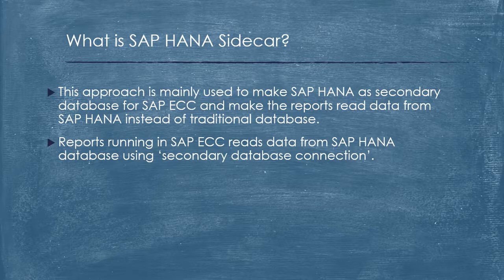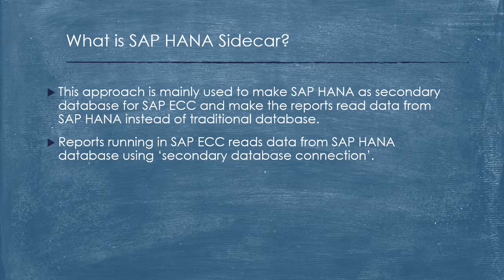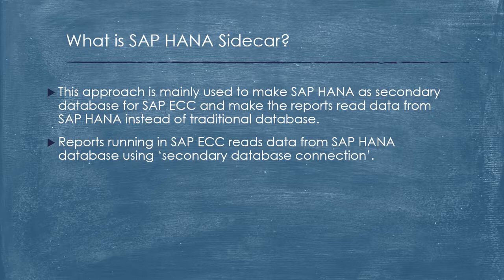In ECC itself, customers will have a lot of reports running on their data. Instead of reading data from the tables residing in the traditional database, they can read the data from SAP HANA, using HANA as a secondary database, and they can actually see the performance improvement that HANA brings. Then they can decide whether to buy a bigger system so they can replicate their entire data set to HANA and make use of HANA's capabilities.